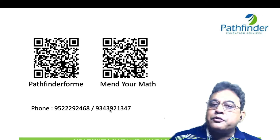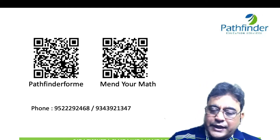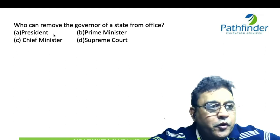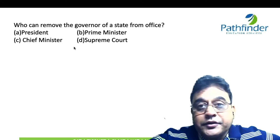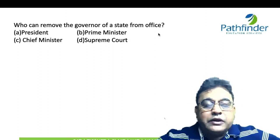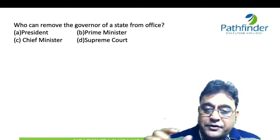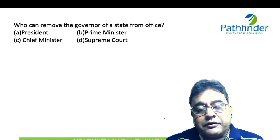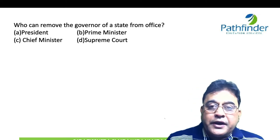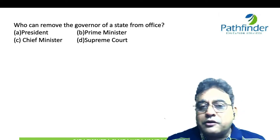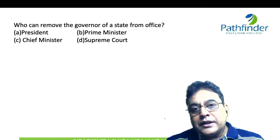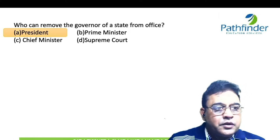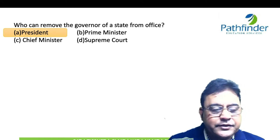First question: Who can remove the Governor of a state from office? Options are President, Prime Minister, Chief Minister, or the Supreme Court. As far as the Constitution is concerned, the Governor is appointed by the President of India, and can remain in office as long as the President wishes. Since the President acts upon the advice of the Prime Minister and council of ministers, practically speaking it is the government which is able to appoint or remove a Governor at will.